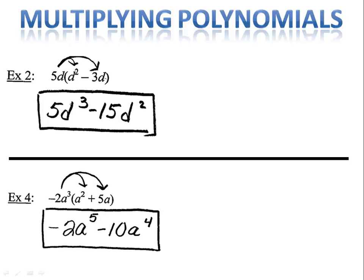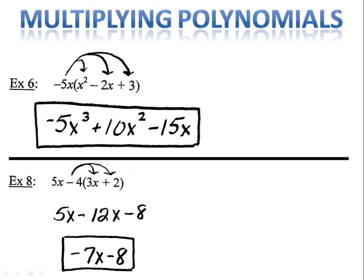Let's see how you did. In example 2, we distributed the 5d and ended up with 5d to the third minus 15d squared. In example 4, we distributed the negative 2a to the third and we got negative 2a to the fifth minus 10a to the fourth. In example 6, we distributed the negative 5x into the trinomial x squared minus 2x plus 3, and ended up with negative 5x to the third plus 10x squared minus 15x. Finally, in number 8, we distributed negative 4 and ended up with negative 7x minus 8.